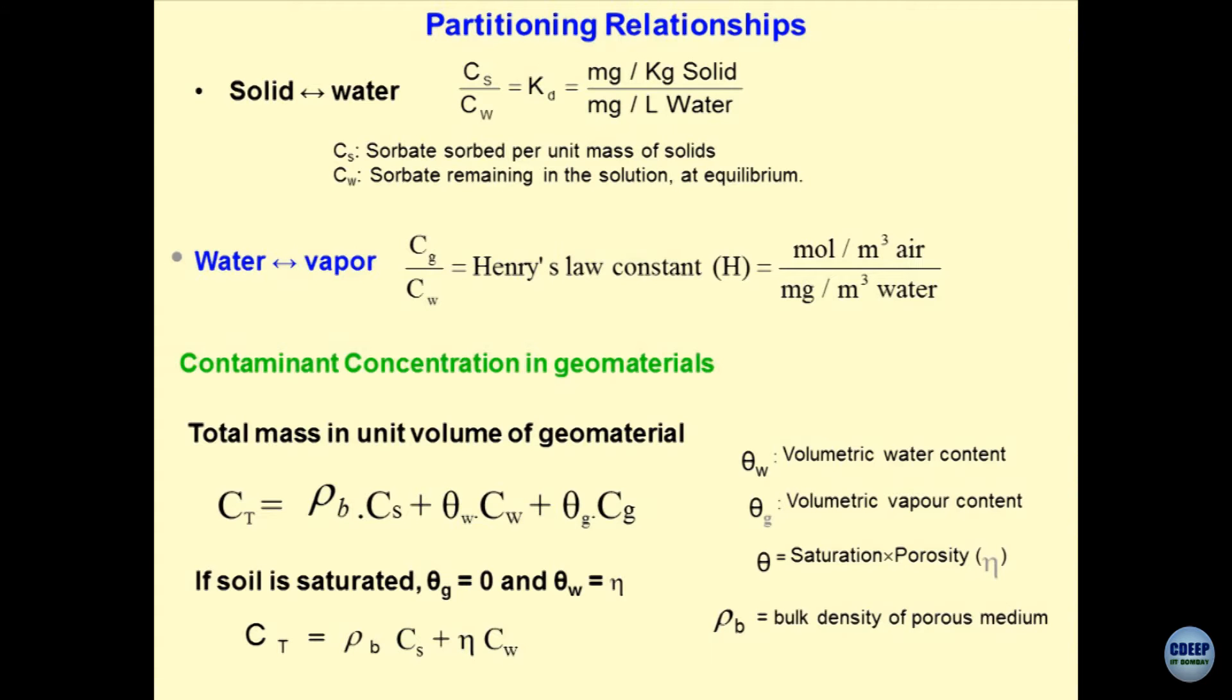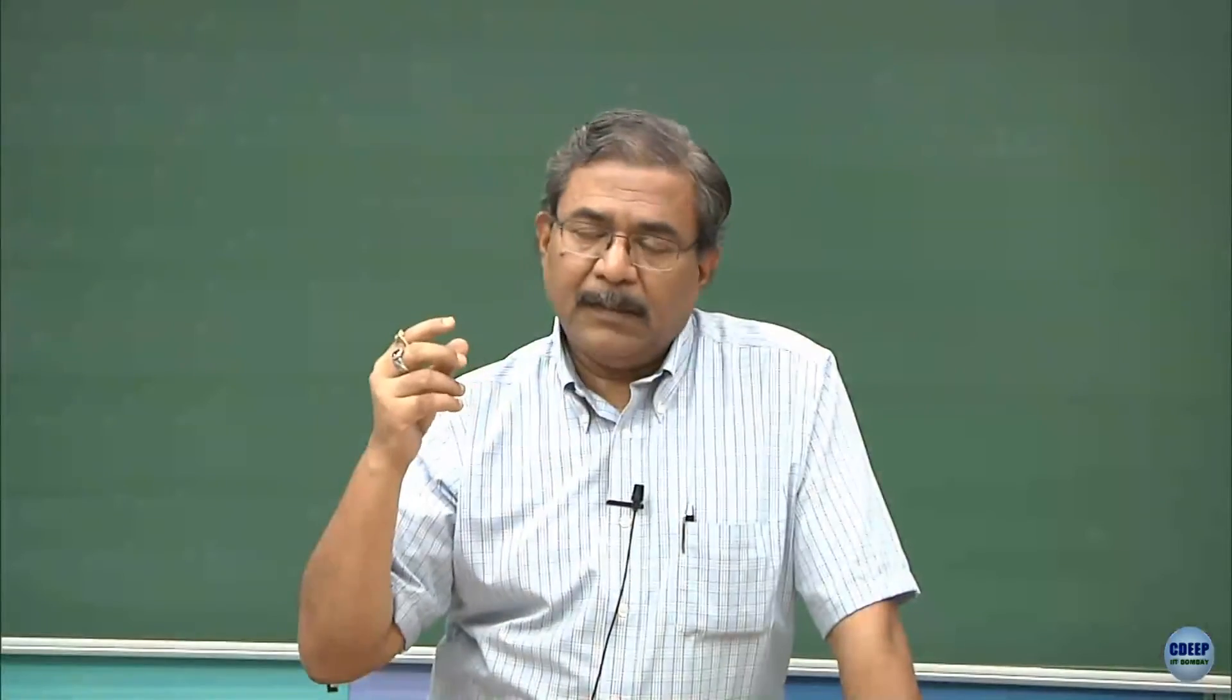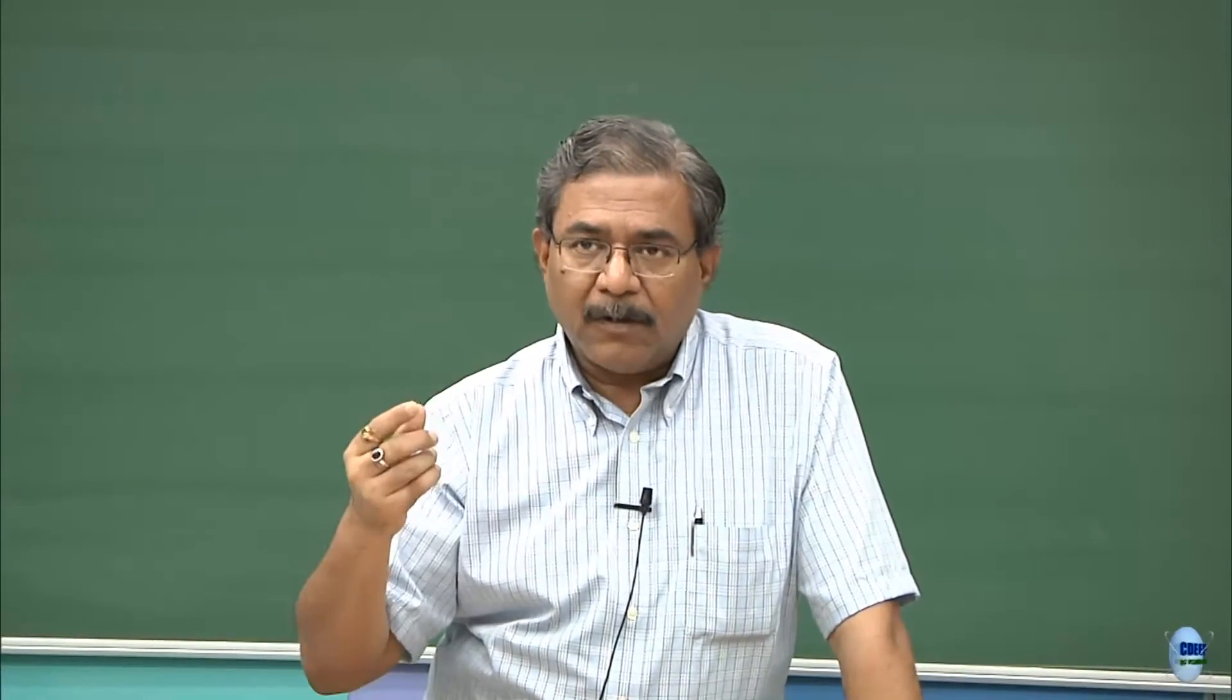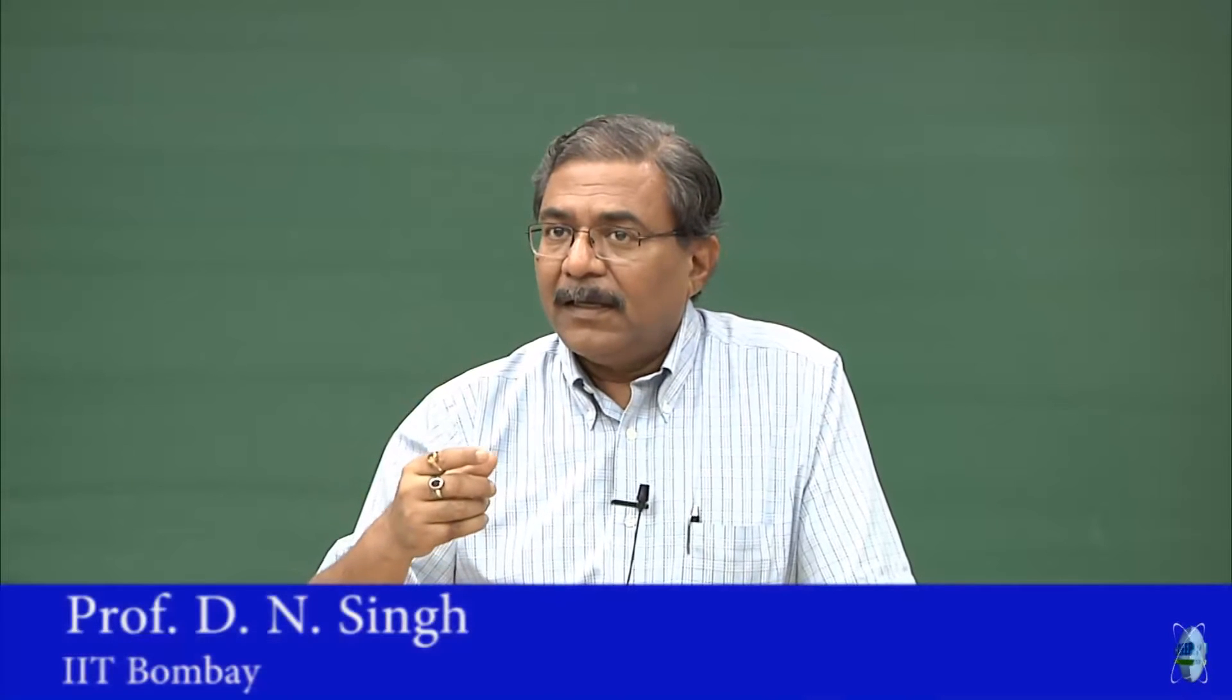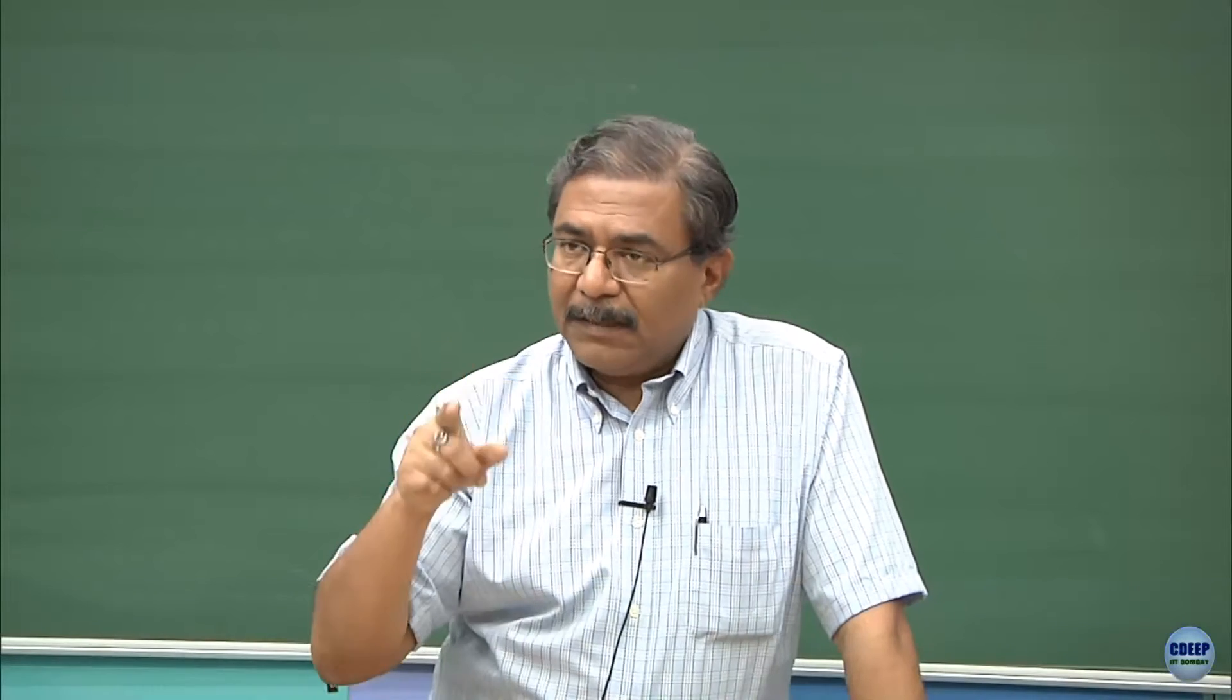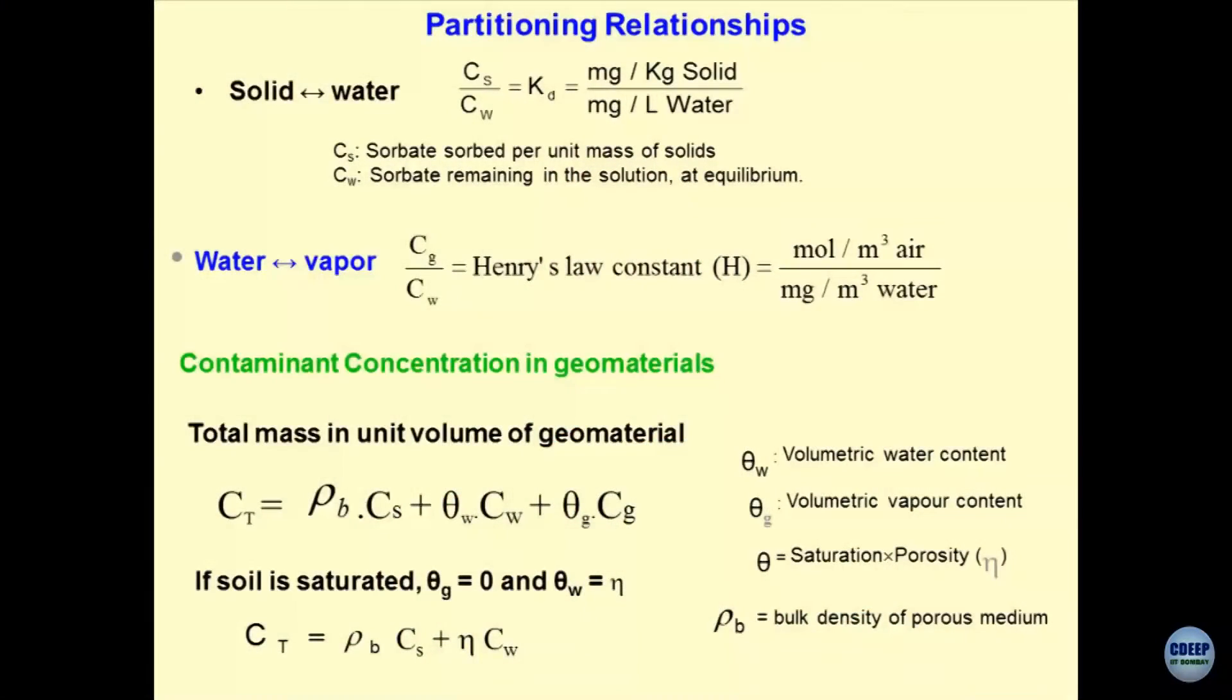So, this is the Kd parameter. Imagine if I have 1 gram of clay and if I dip it in a solution of some molarity, how many cations have got sorbed on the clay particle can be obtained by deducting the Cw from the initial concentration by using ICP or atomic absorption spectrophotometer. Cs is the sorbate which is sorbed on the solids and Cw is a sorbate which is remaining in the solution at equilibrium.